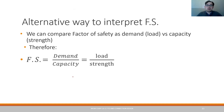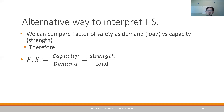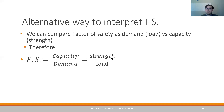Another way to think about this is the relationship between capacity and demand. Factor of safety is capacity over demand — we always want this to be greater than one, meaning capacity exceeds demand. This is often expressed in terms of strength and load. If you get into civil engineering — roadways, pump design — the same idea of capacity over demand applies in those fields as well, so you'll see factors of safety there too.